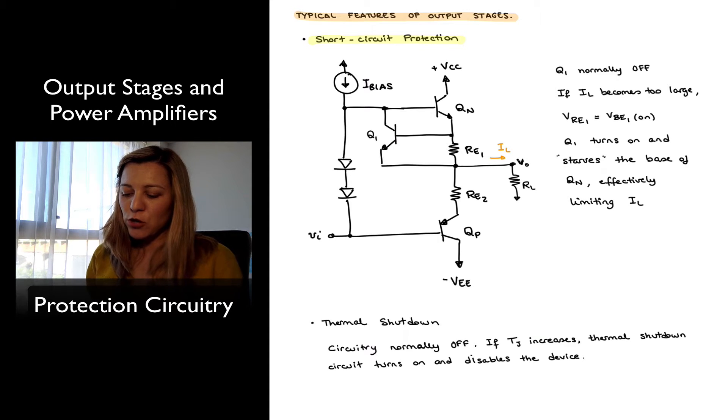Output transistors are Qn and Qp, and notice that we have added resistors Re1 and Re2. In all reality, we've only added the short circuit protection on the top side for Qn, which is comprised of transistor Q1 and Re1.